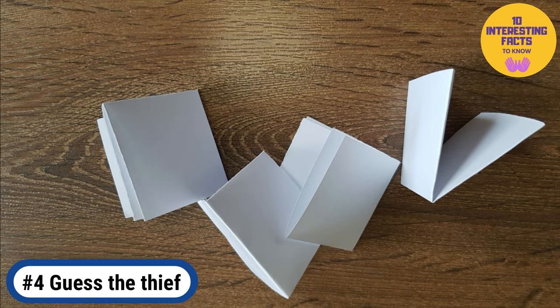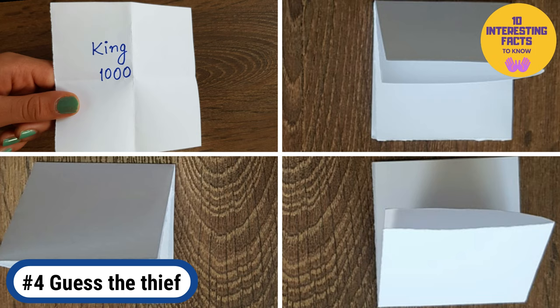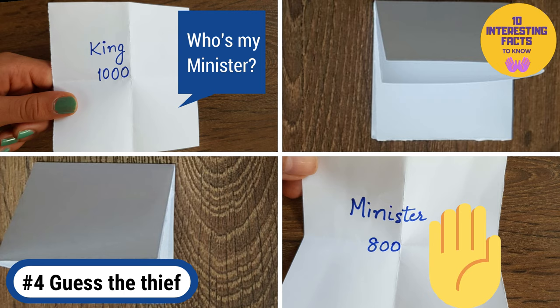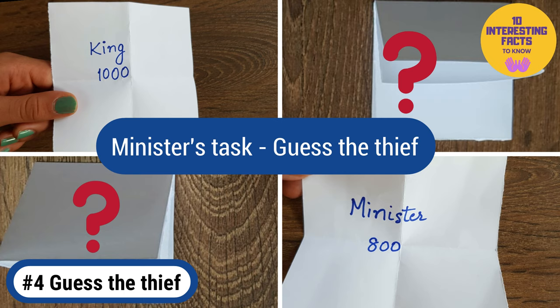The player who gets the king slip reveals his role first and asks Who's my minister? The minister acknowledges, Here I am your majesty! Now the minister has a task to guess the thief after the remaining two players with roles of thief and police have to keep their roles secret.